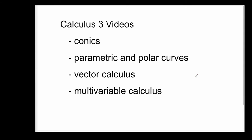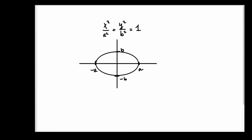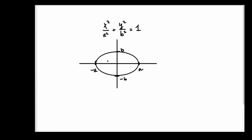The first video I'm going to do today is in the conics section, and it's going to be the area bounded by the curve of the ellipse. This is the equation of the ellipse: x squared over a squared plus y squared over b squared equals 1. And there's a graph of the ellipse, and the area I'm looking for is the region bounded by this curve.